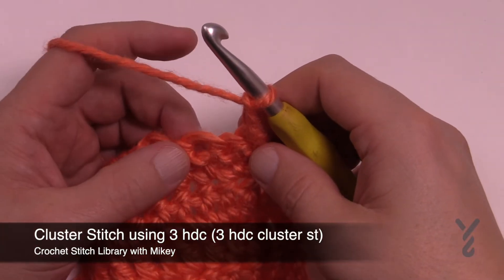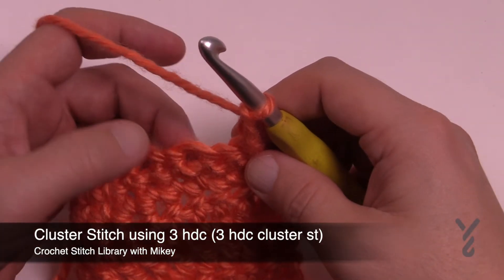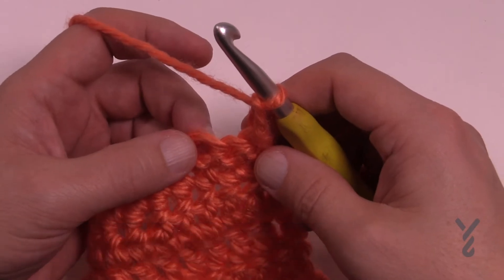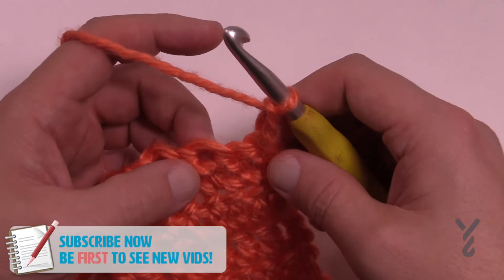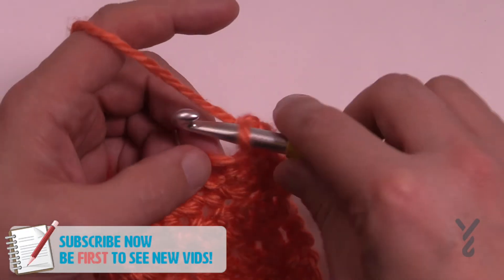In this video I'm going to show you how to do a cluster using half double crochets and there's gonna be three stitches that make up this cluster. The number of stitches that it requires is usually defined in a pattern. So let's just say that we're gonna put three in there.